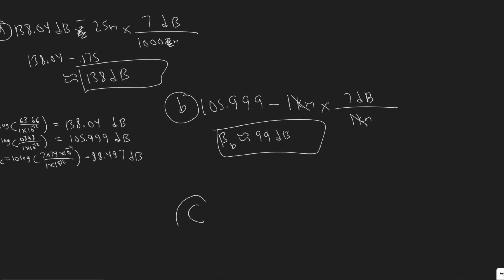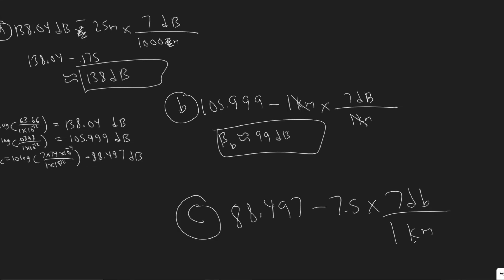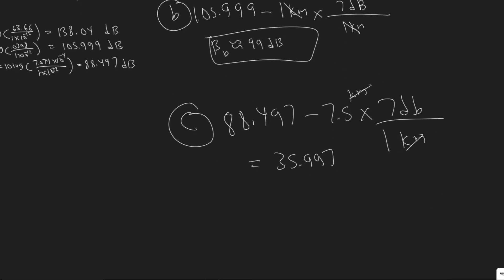For part C, we take 88.497 minus the distance of 7.5 kilometers times 7 decibels per kilometer. 7.5 times 7 is 52.5, so 88.497 minus 52.5 gives us 35.997, basically 36 decibels. So the answer to C is 36 decibels.